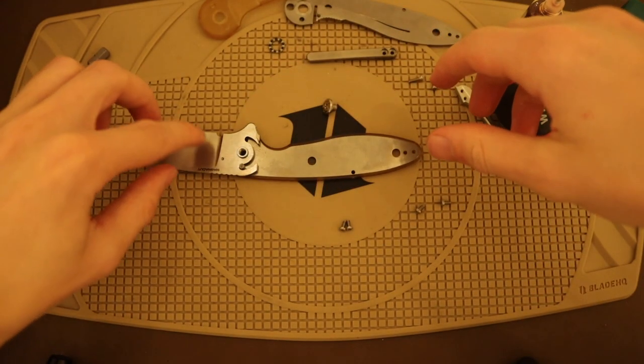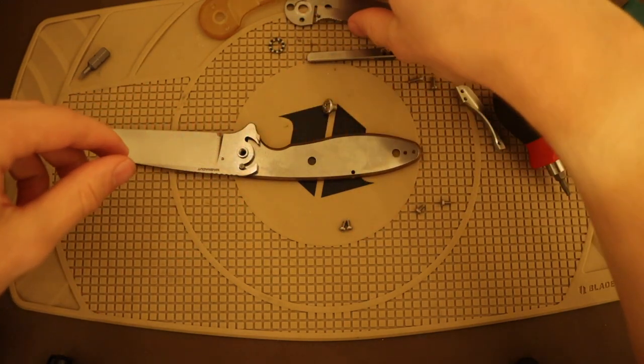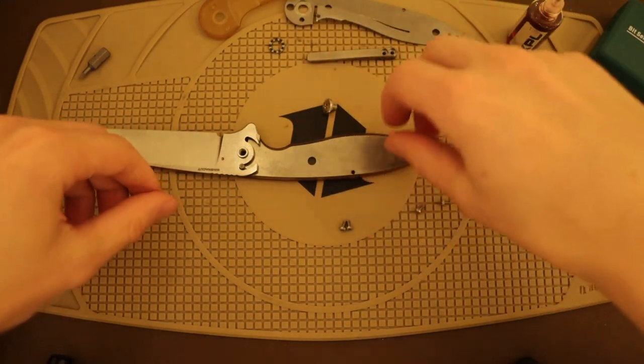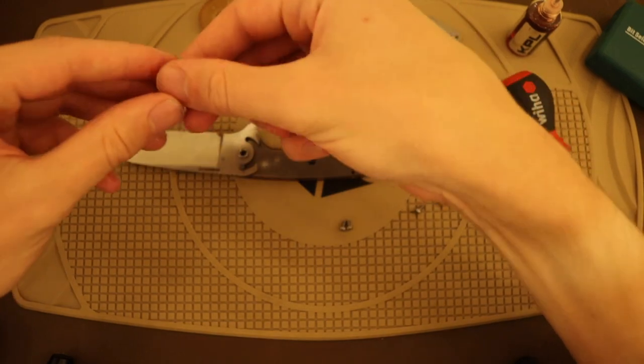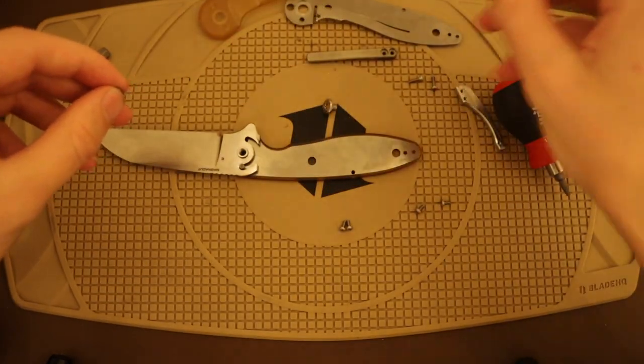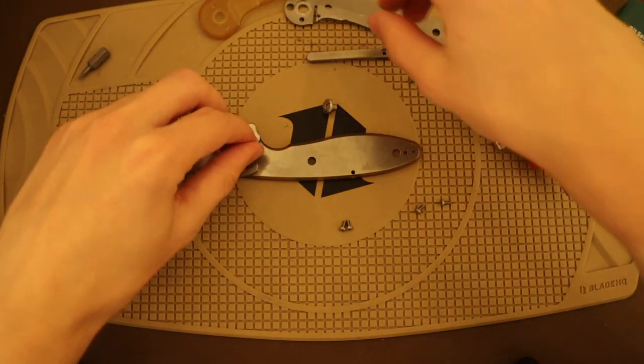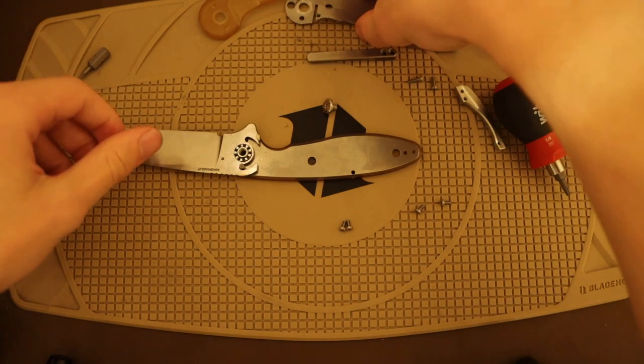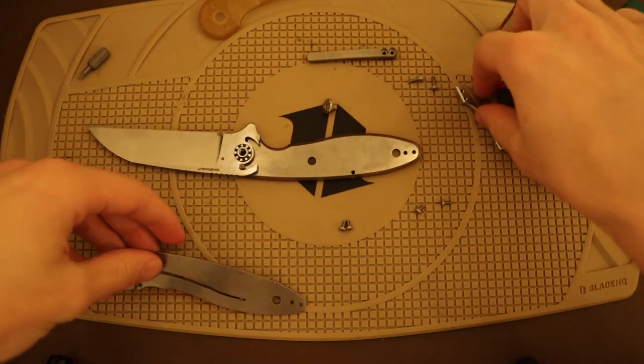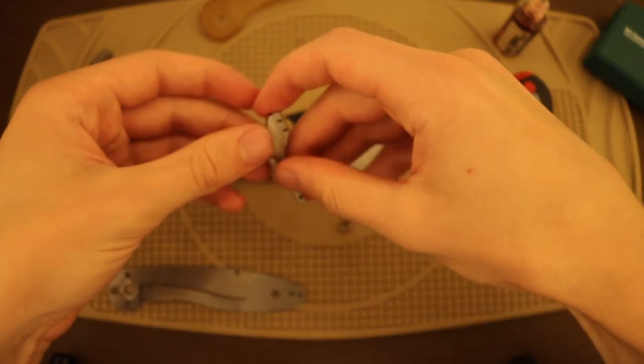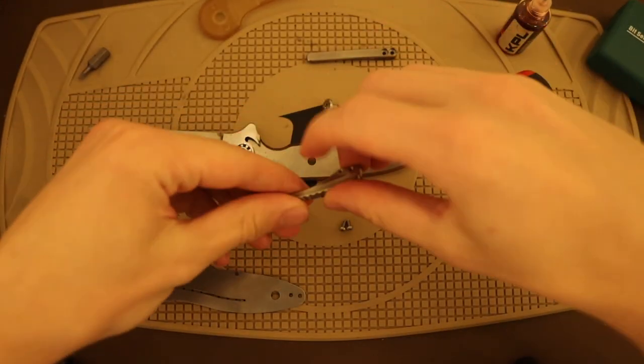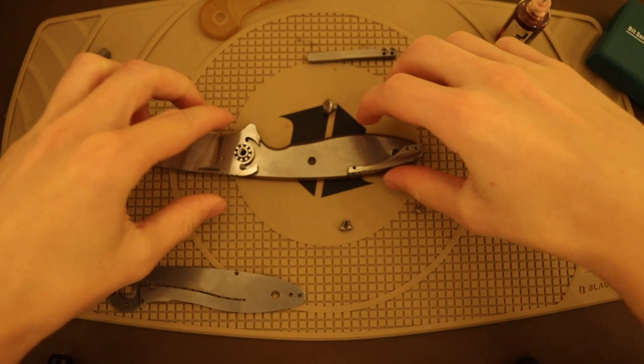Alright, and for those wondering, this is the detent divot right there where the detent is locked in, or where the detent locks in. It's a lot higher on the blade than I was actually expecting, but still pretty cool.